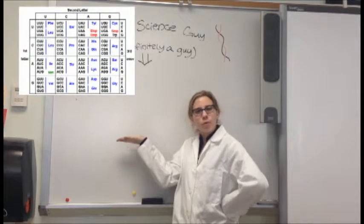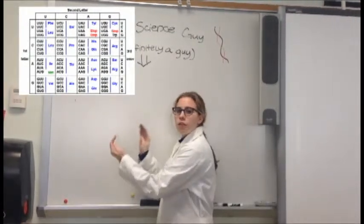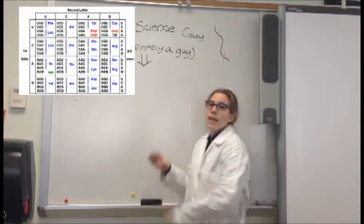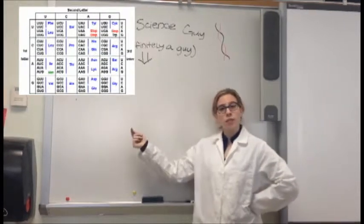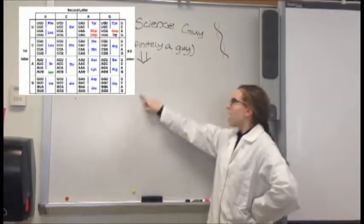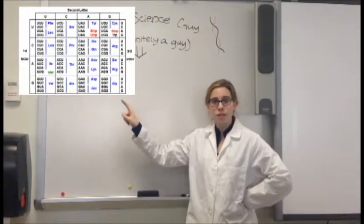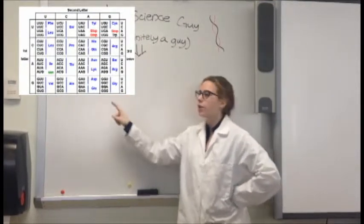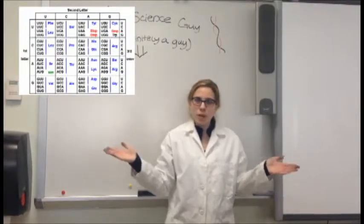This is a codon table. See all these letters? Each sequence of three letters is called a codon, and what it does is it tells what amino acid has to go in that spot. Pretty cool, right? As you can see, there are a bunch of sequences of three letters on this table, and each one of these codes for the amino acid that's next to it. Pretty simple, right?